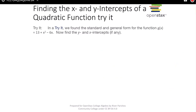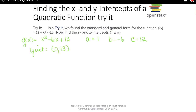Your turn to try — pause the video, find the x and y-intercepts of this function, then unpause and we'll figure it out together. The function needs to be rewritten as ax² + bx + c. This is the same one we had earlier where a = 1, b = −6, and c = 13. So the y-intercept is 13, since c is your y-intercept.